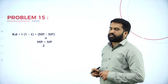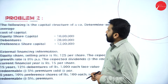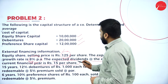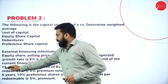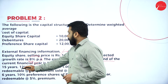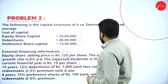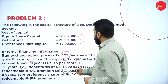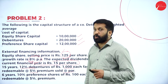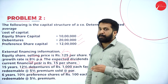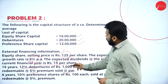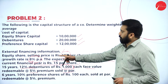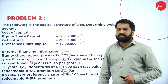Now we move to the cost of debenture. Going back to the question: the debenture is redeemable over 15 years, 12% debenture of rupees 1000 each face value, redeemable at 5% premium, and sold at par. So the number of years is 15, the face value is 1000, sold at par (1000), and redeemable at a 5% premium.